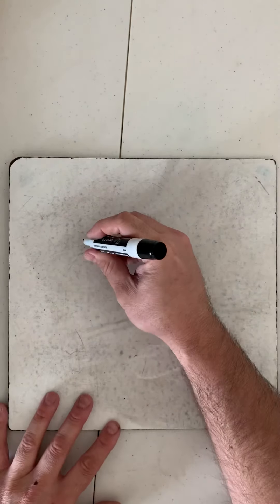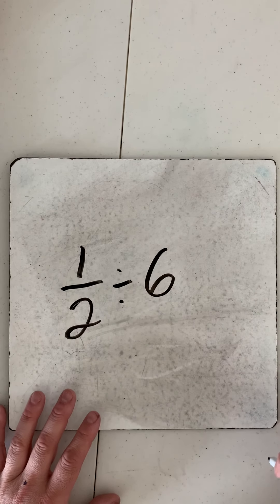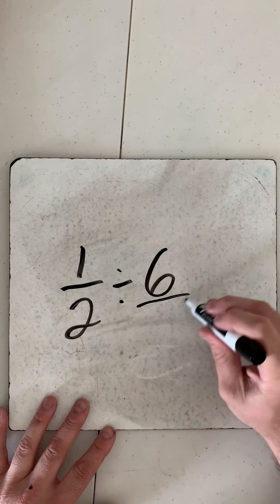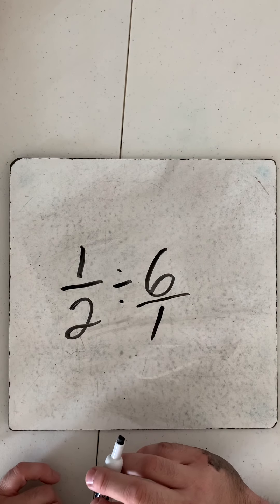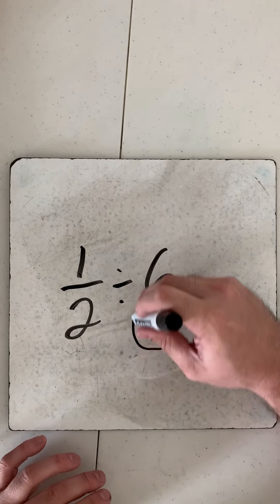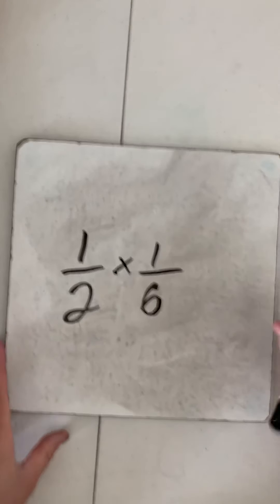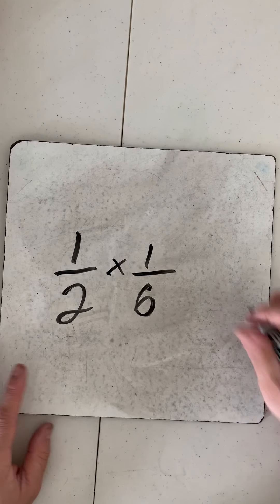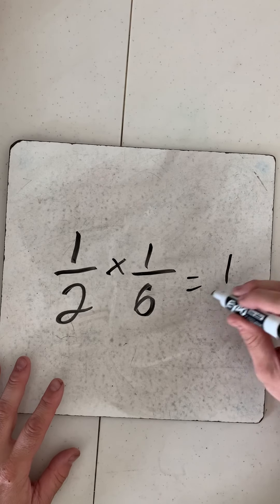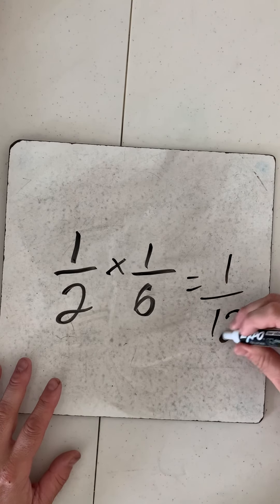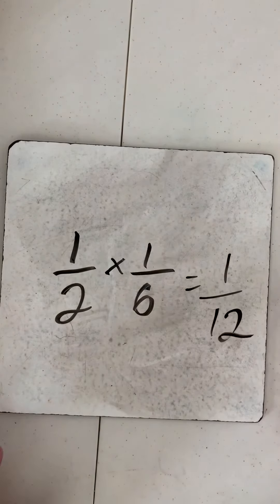Would be 1/2 divided by 6. We know when we see whole numbers we're going to put it over 1. My next step, I got to take the reciprocal, so 6 over 1 becomes 1/6. I change the sign from division to multiplication. I know 1 times 1 is 1, and 2 times 6 is 12. 1/12.